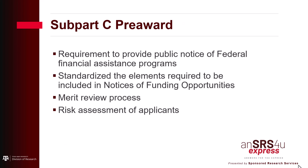Subpart C prescribes instructions and other pre-award matters to be used by federal awarding agencies in program planning, announcement, application, and award processes. It instructs federal agencies to provide a standard minimum 60-day period for recipients to respond to funding opportunity announcements, and standardizes the elements required to be included in notices of funding opportunities. This subpart also states the requirement that agencies must have a merit review process for applications and prescribes that federal agencies must conduct a risk assessment of the recipient prior to making an award.